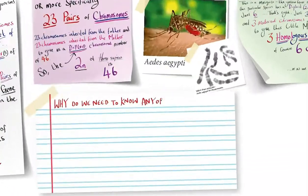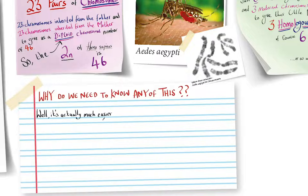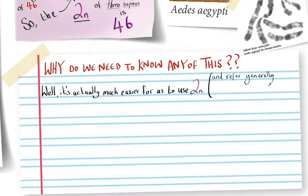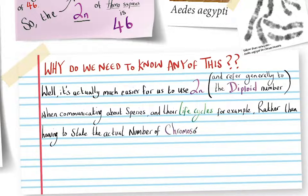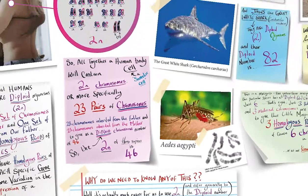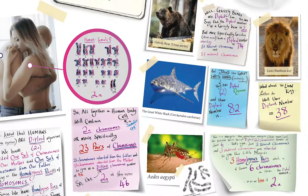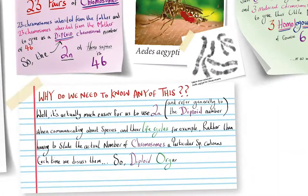So why do we need to know any of this? Well, it's actually much easier for us to use 2n and refer generally to the diploid number when communicating about species and their life cycles, rather than having to state the actual number of chromosomes a particular species contains each time. And of course, you could be asked about any diploid organism in the exams, usually involving the life cycles and recognition of where mitosis and meiosis take place, which we'll cover in the next few lessons.